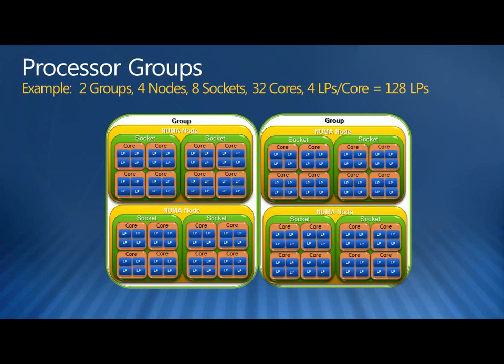Here's an example of how you could have 128 logical processors organized into two groups with four nodes, eight sockets, 32 cores, and four logical processors per core. This is just one way it could be organized.